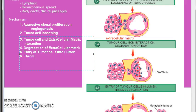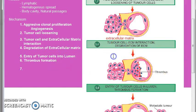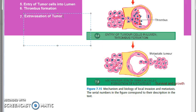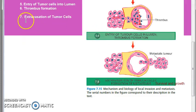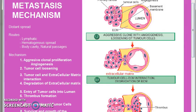Step six: a thrombus is formed. Step seven: extravasation of tumor cells — they exit the lumen into a new location. Step eight: survival and growth of the metastatic deposit. Now about each of these steps I will tell you some more points.